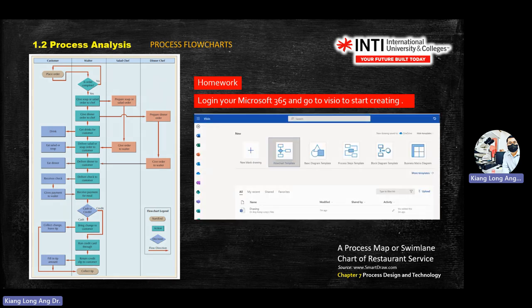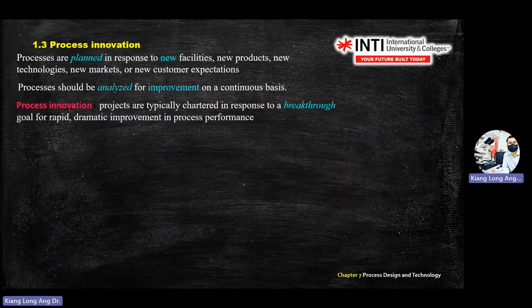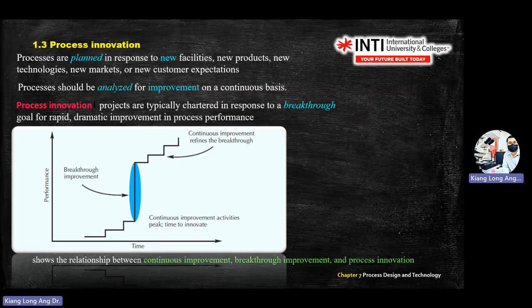Now, when you have process innovation, it always links with a breakthrough. Looking at the chart, you have performance on the vertical axis and time on the horizontal. You have small incremental steps in the beginning, and then when you make a jump in performance, that is a breakthrough — that is where process innovation takes place.